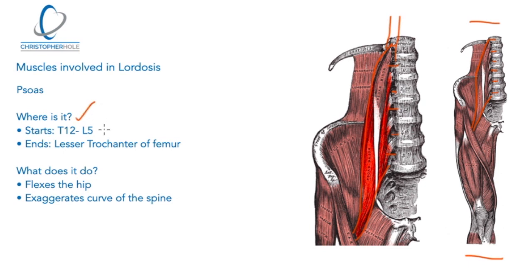The psoas starts at T12, goes all the way down to L5, and ends at the lesser trochanter of the femur — the bone that goes up through the leg and joins into the pelvis at the top. The lesser trochanter is a bony landmark on the inside of that bone, so it joins there and all the way up the lumbar spine. The muscle flexes the hip and creates the exaggerated curve of the spine.